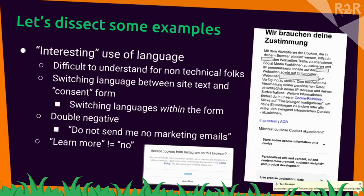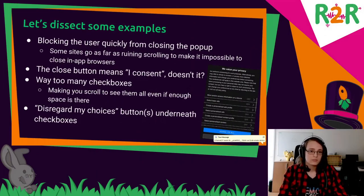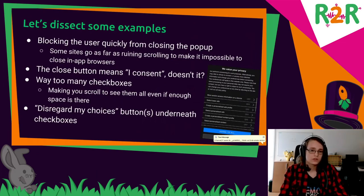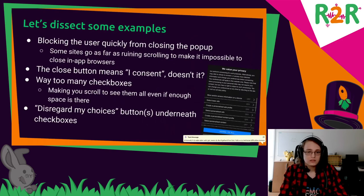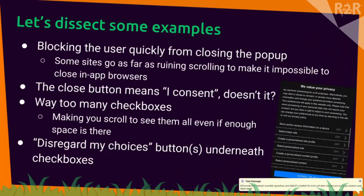Another pattern is blocking the user from quickly closing the pop-up. Some sites ruin the scrolling to make it impossible to close in-app browsers — in many in-app browsers you scroll up to reveal the X button, and they disable scrolling so you can't close it. This is especially annoying if you've accidentally clicked a link in Twitter and then can't exit without closing the whole app. Also, the close button doesn't mean 'I consent,' but sites simply say it does — if you hit the backdrop on a modal, they claim that means you consented.